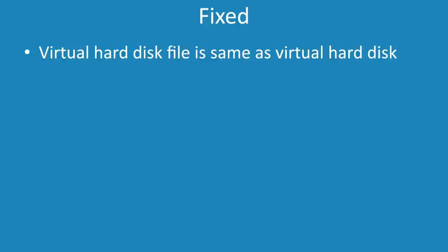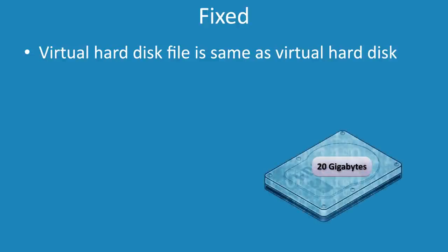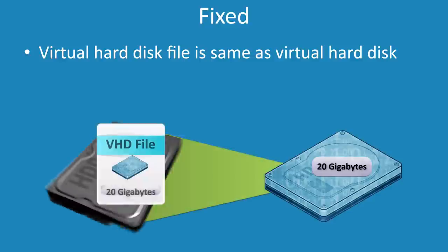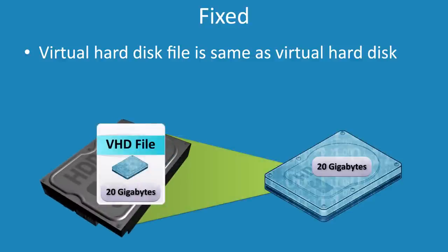In this case, if you had a 20 gigabyte virtual hard disk, it would take up 20 gigabytes on the physical drive in the form of a VHD file. The advantage of this is improved performance — since the virtual drive is the same size as the VHD file, it is a simple process to write data to the file.